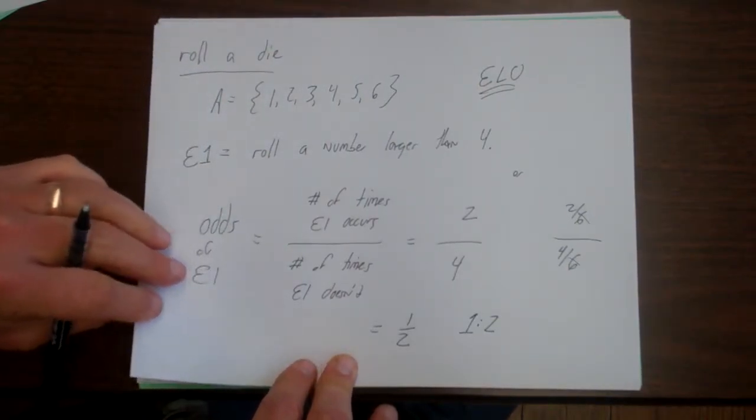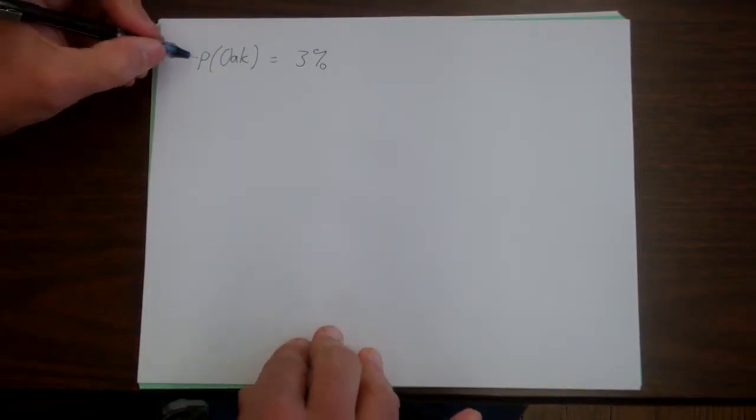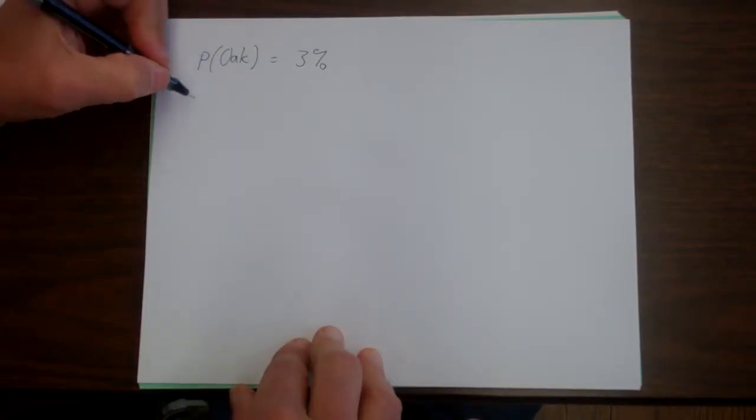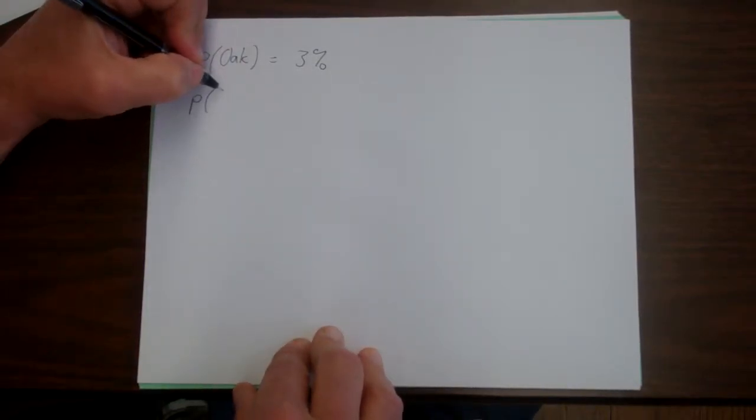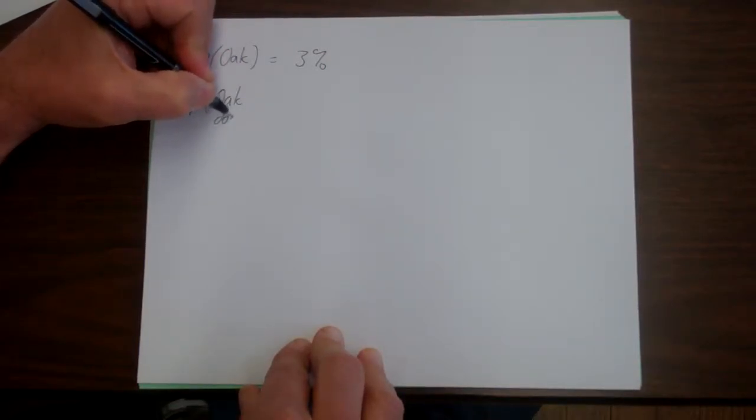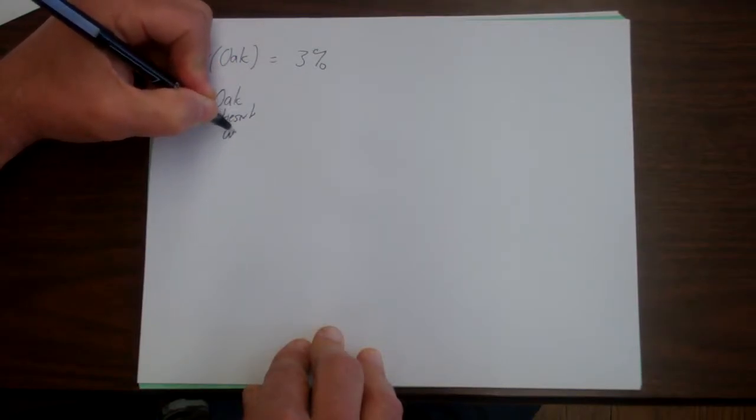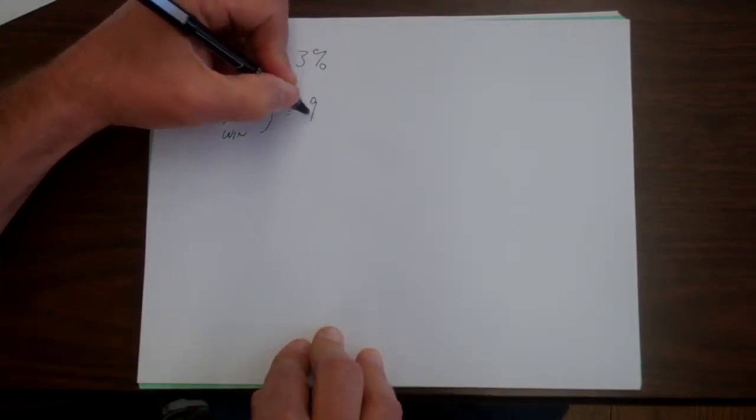Let's do a sports example because this is used in sports most commonly. So let's say that the probability that the Oakland Raiders win the Super Bowl is 3%. Well, if the probability that the Oakland Raiders win the Super Bowl is 3%, that means the probability they don't win will be 97%.